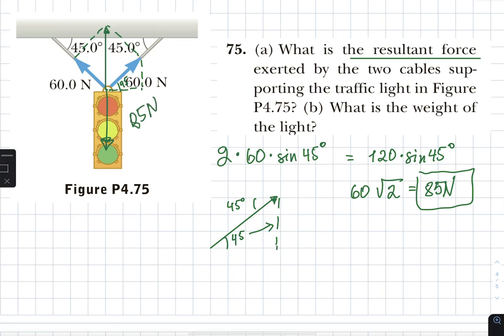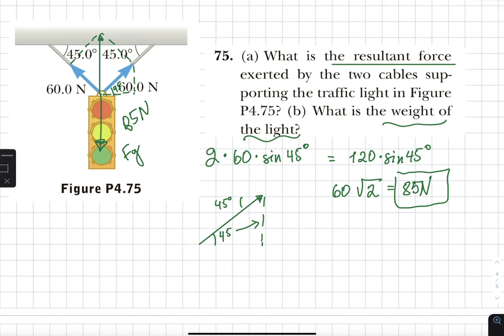85 newtons, which is force of gravity or weight of the light. That's your answer right there. Very short, very sweet, very easy. The only thing, if you are to obey sig fig rules, because they gave us three sig figs to begin with, this answer is 84.9 newtons. There. That's it.